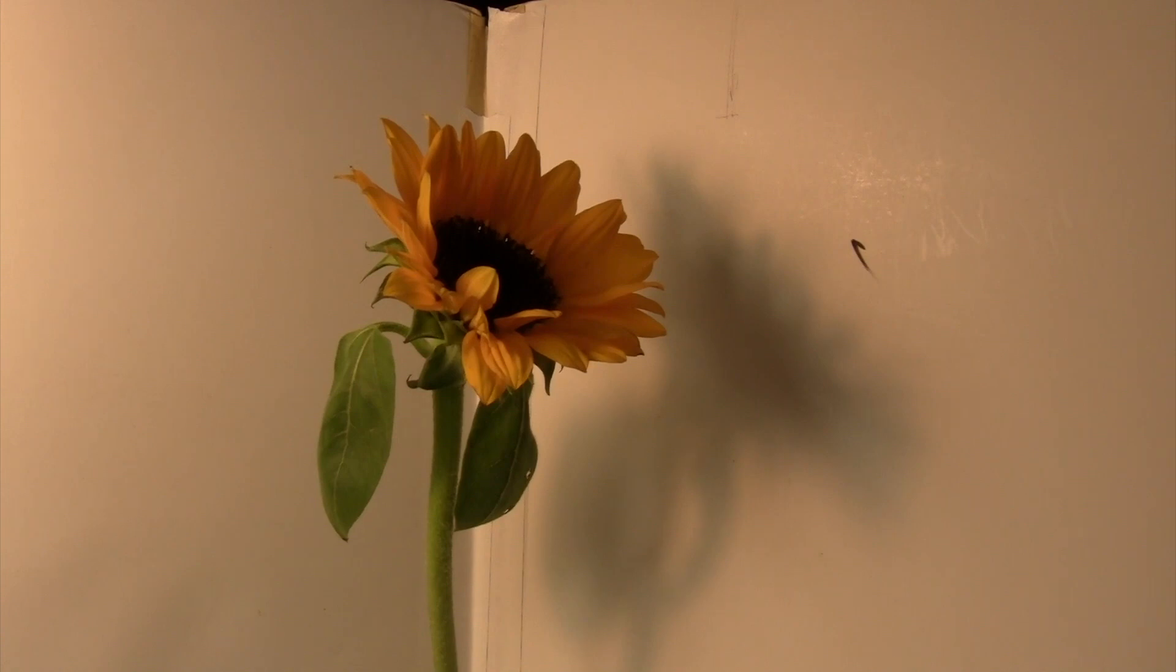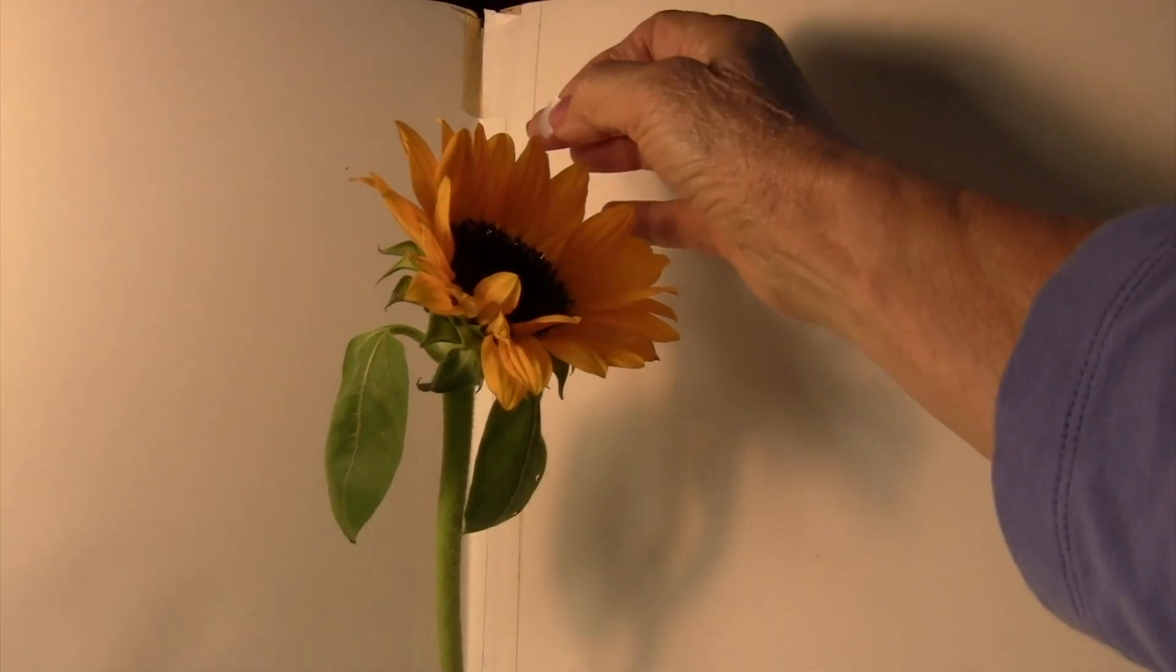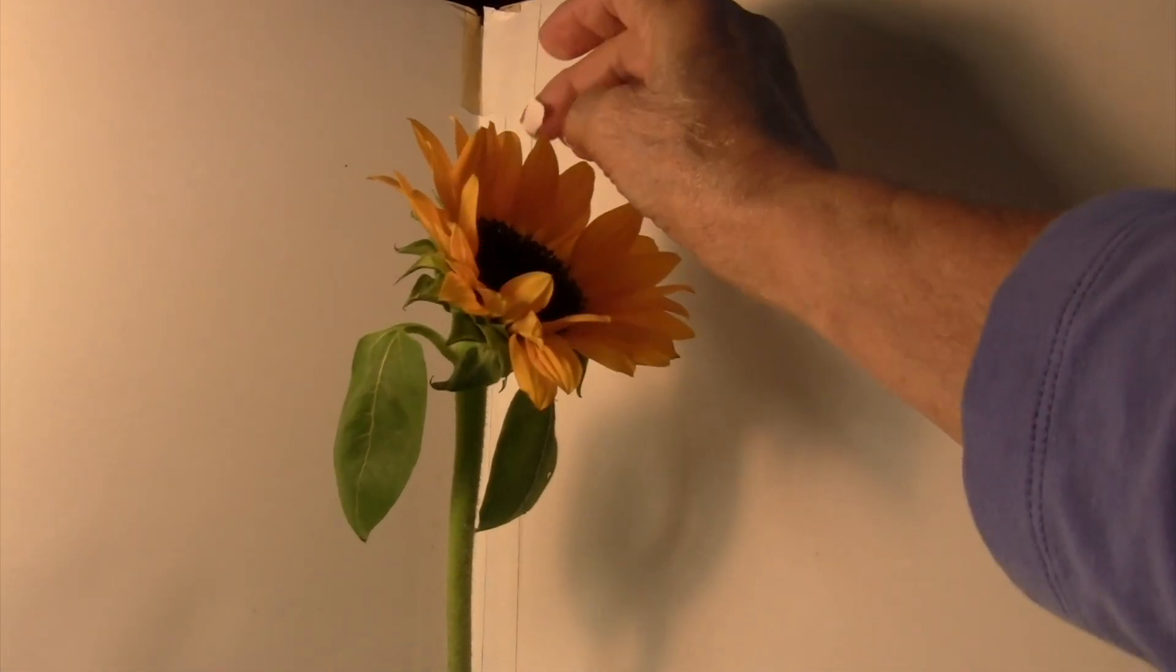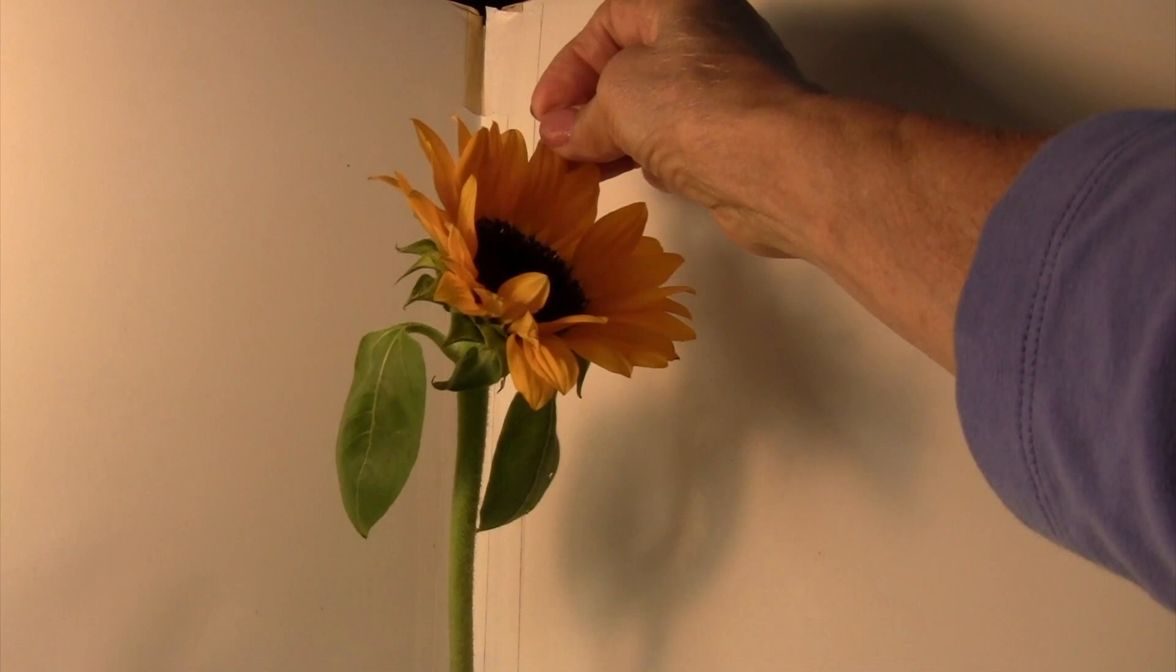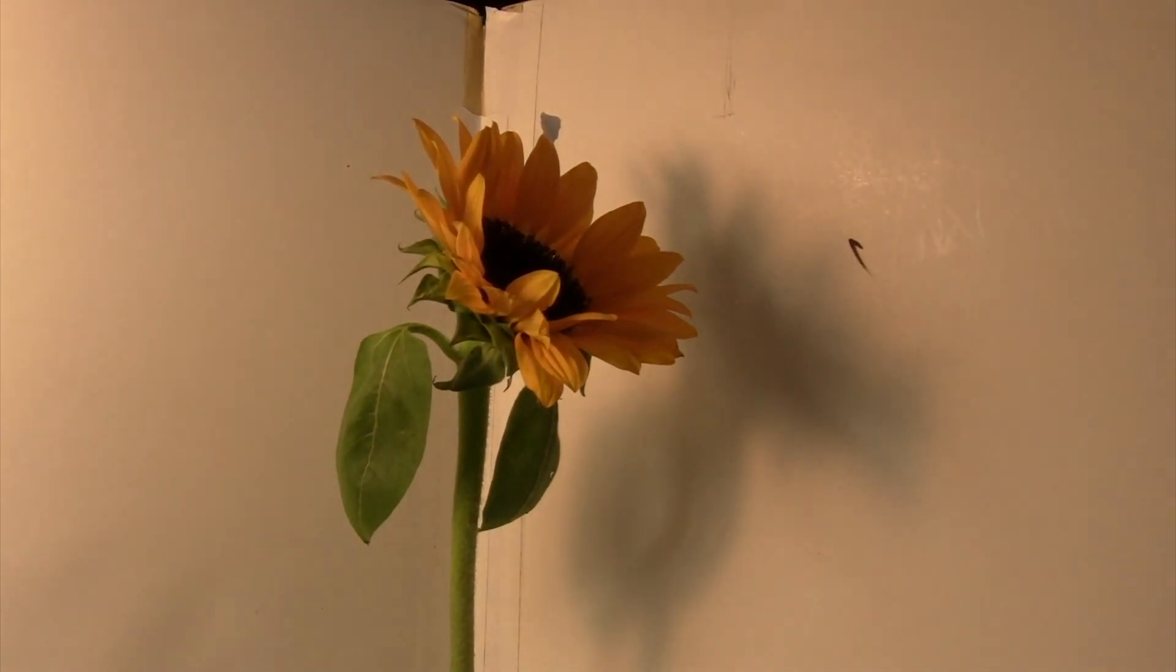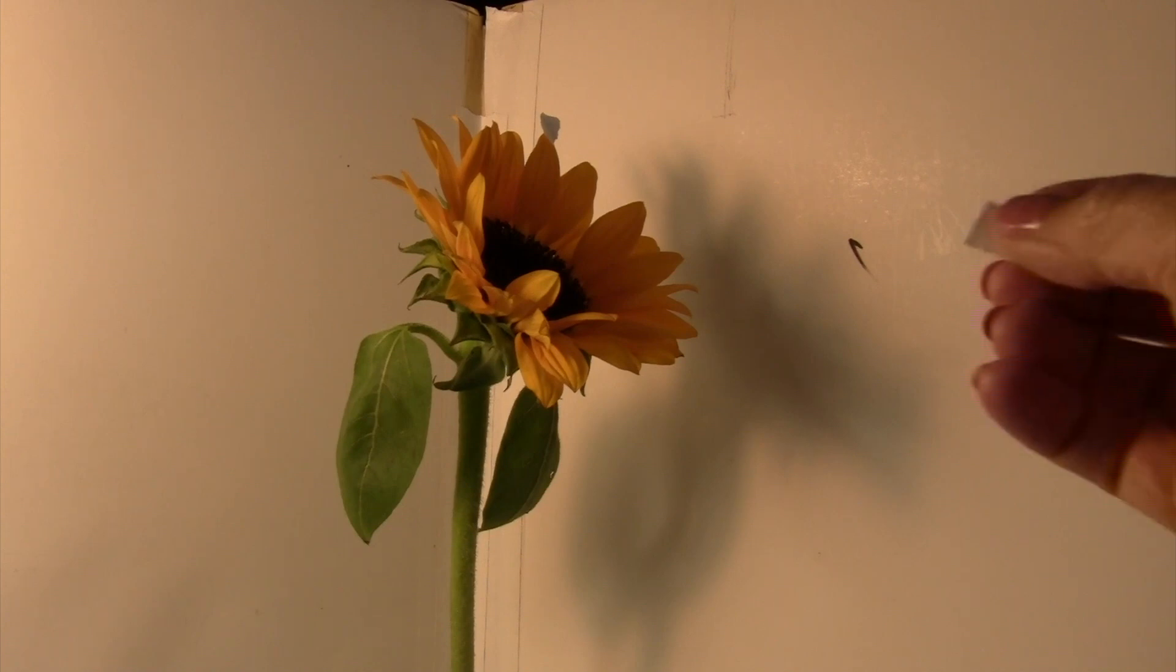So here's our flower. And now we have to decide on our clock points. I'm going to use this point here. This petal here. And I'm just going to put a little marker on here. That's going to be my 12 o'clock petal.